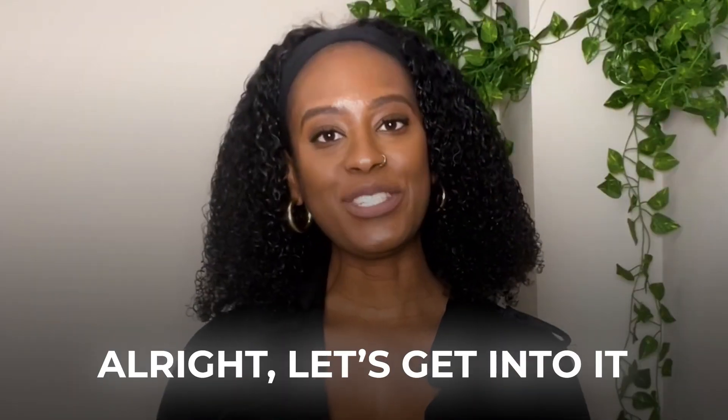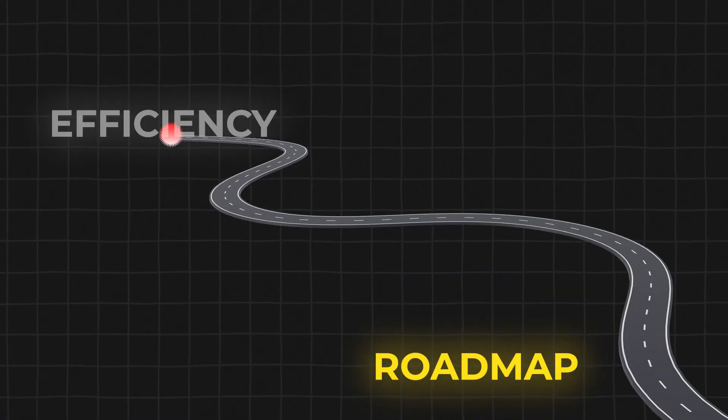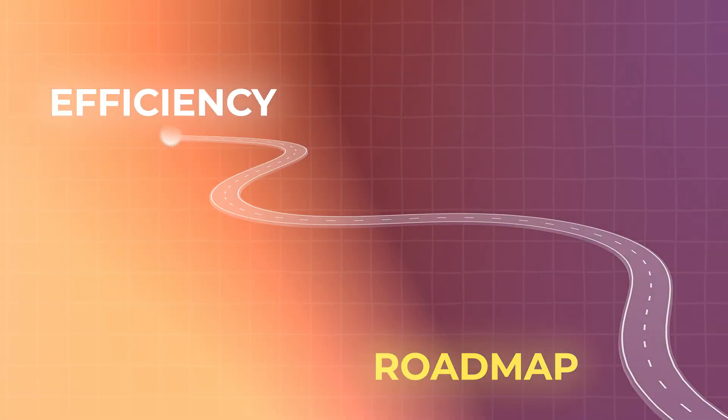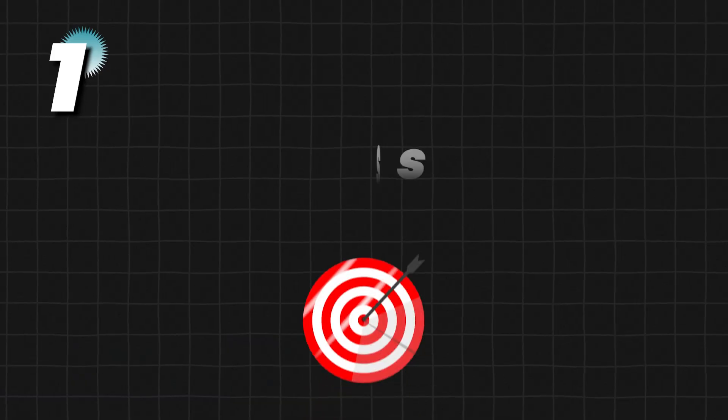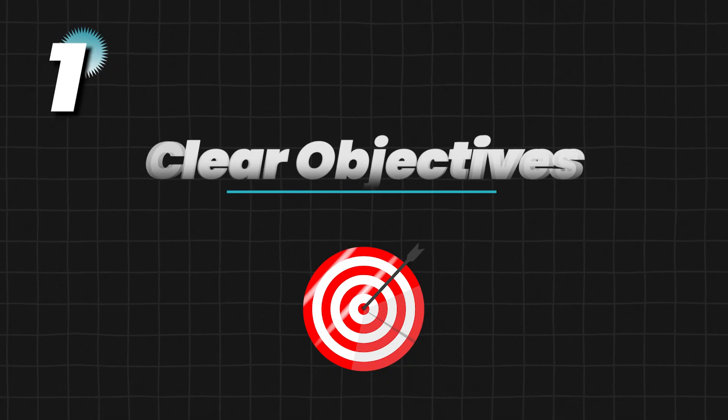A well-documented process isn't just a boring checklist — it's a roadmap to efficiency. The most effective process documents have three essential elements. First, they have clear objectives, meaning they define exactly what the process is meant to achieve.